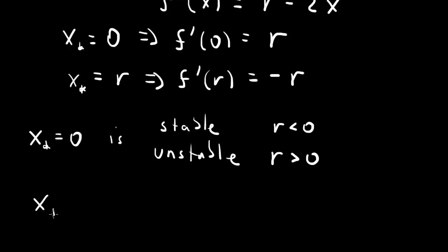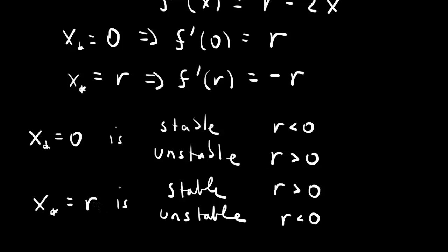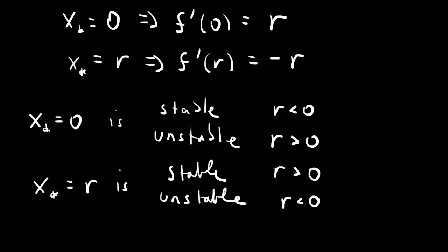For the second fixed point, x-star equals r, the derivative is minus r. So when r is negative, the derivative is positive and the fixed point is unstable. When r is positive, the derivative is negative and the fixed point is stable. So when one fixed point is stable, the other is unstable.